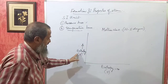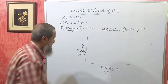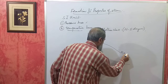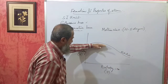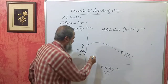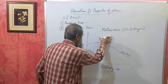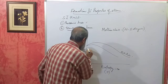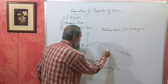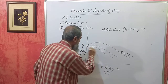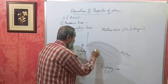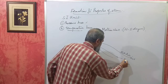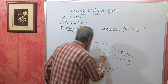In the Mollier chart, you will find one line called the saturation line. The area below this is called the wet region, and the region above is called the superheated region. In the wet region, you will find constant dryness fraction lines — for example, dryness fraction of 1 (100%), then 0.95, 0.9, 0.85, 0.8, and so on.